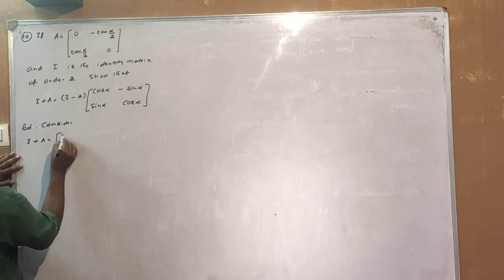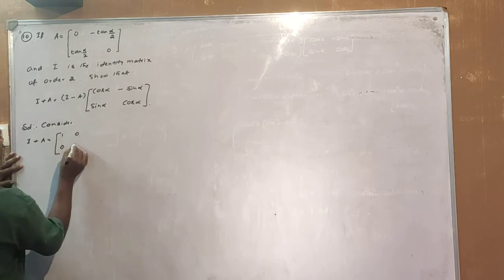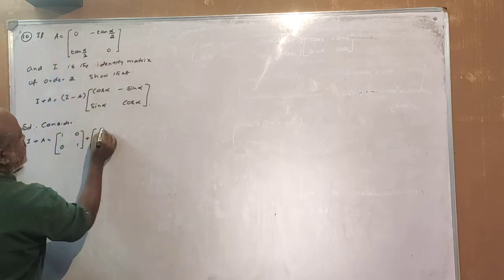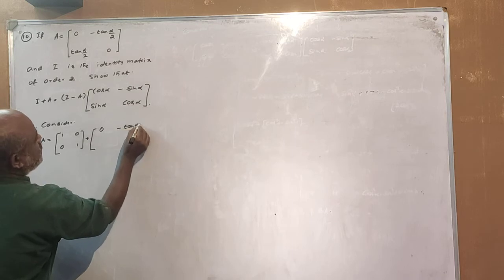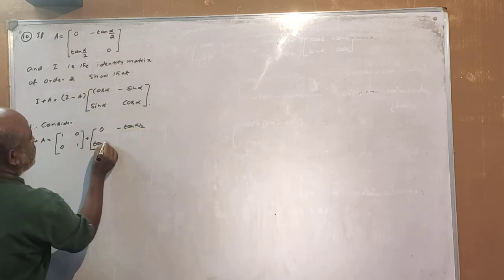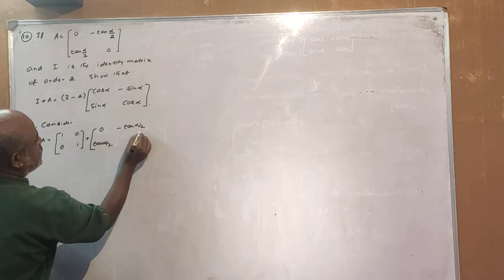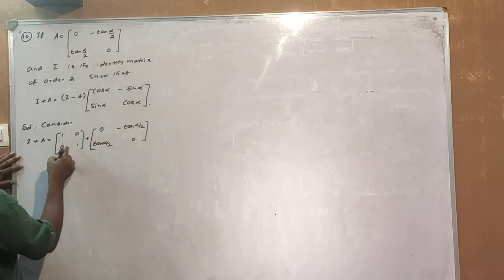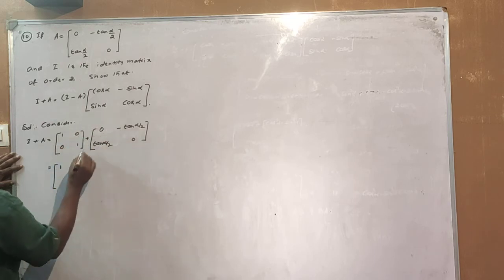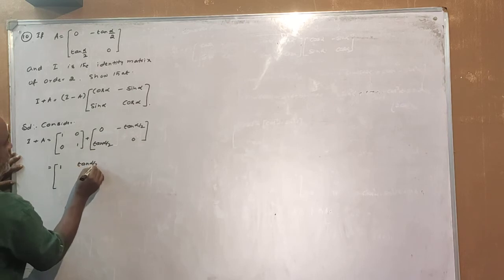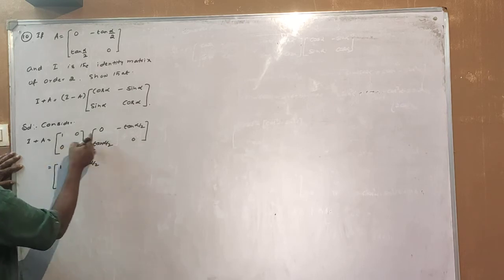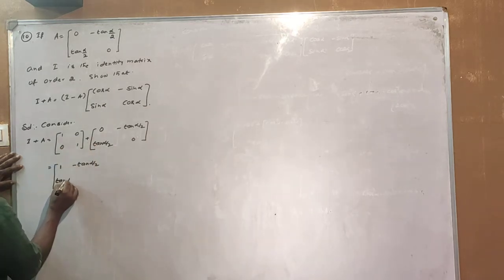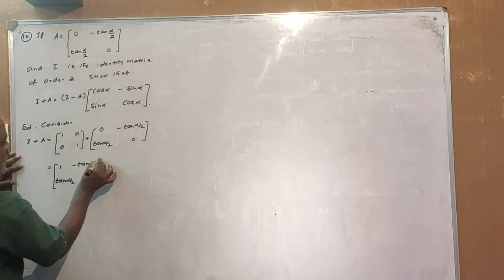The identity matrix I is: 1, 0, 0, 1. Plus A is equal to 0, minus tan(α/2), tan(α/2), 0. So I plus A equals: 1, minus tan(α/2), tan(α/2), 1.